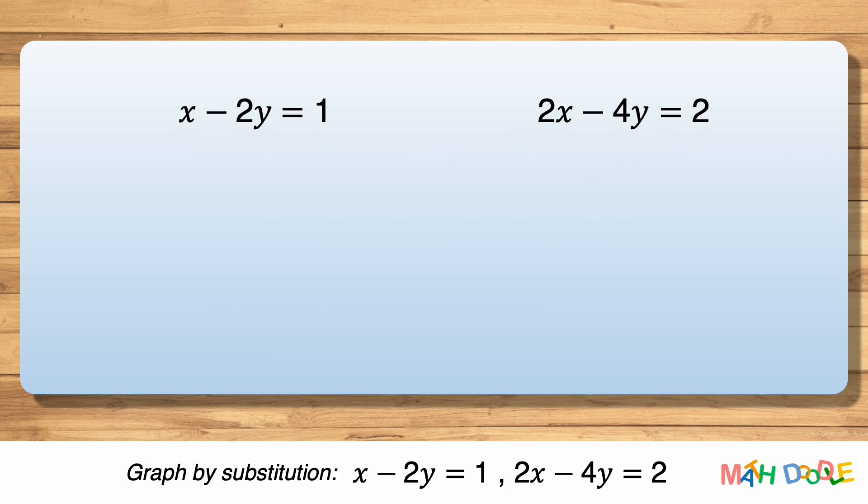First, let's solve x minus 2y equals 1 for x, so that the equation has only x on the left side.